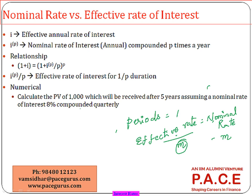If the annual effective rate of interest is I and the annual nominal rate is IP, and the compounding happens annually, then I is always equal to IP. If compounding happens annually, there is no difference between an effective annual rate and a nominal annual rate.